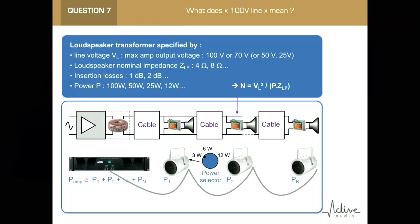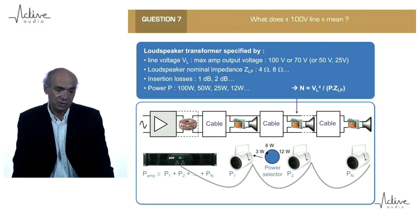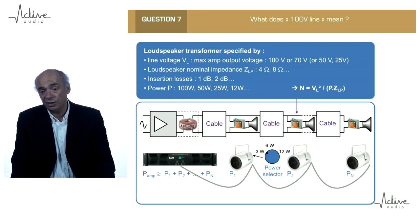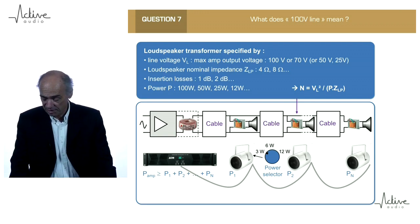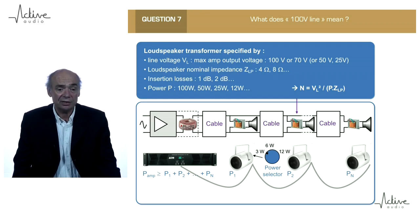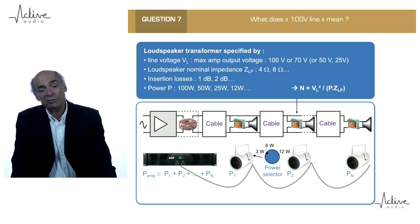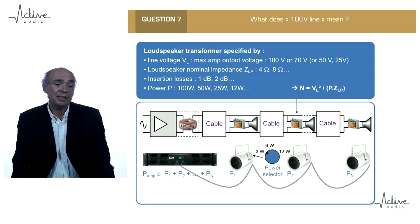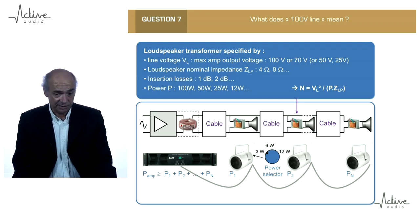Each of these loudspeakers may have a switch which enables selecting the power of each of them, and therefore the sound level played by these loudspeakers. And the total of all the powers of all the loudspeakers connected to the amplifier in the daisy chain, this sum of power has to be less than the power of the amplifier.